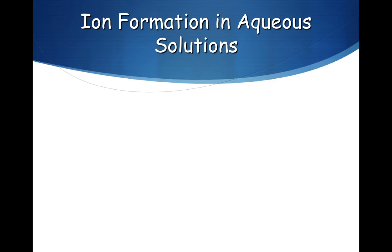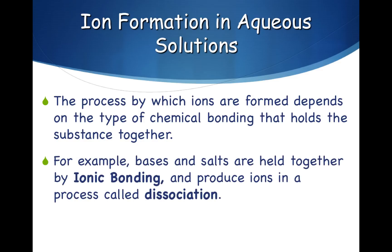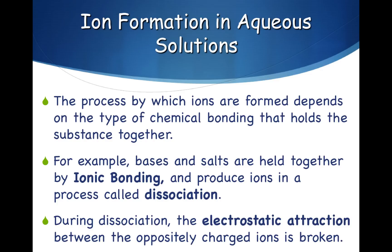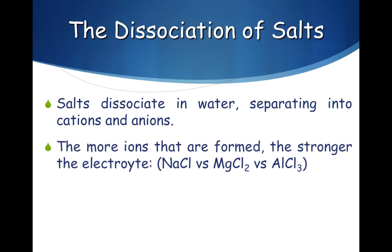How ions are formed depends on the type of chemical bonding that holds the substance together. For example, bases and salts are held together by ionic bonding and produce ions in a process called dissociation. During dissociation, the electrostatic attraction between the oppositely charged ions is broken. When salts dissociate in water, they separate into cations, which have a positive charge, and anions, which have a negative charge. The more ions that are formed, the stronger the electrolyte.